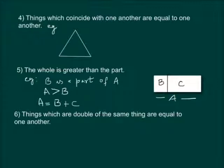Axiom 6 says, things which are double of the same thing are equal to one another. For example, if in some polygon, angle A is equal to two times angle C and angle B is also equal to two times angle C, this would imply that angle A is equal to angle B.